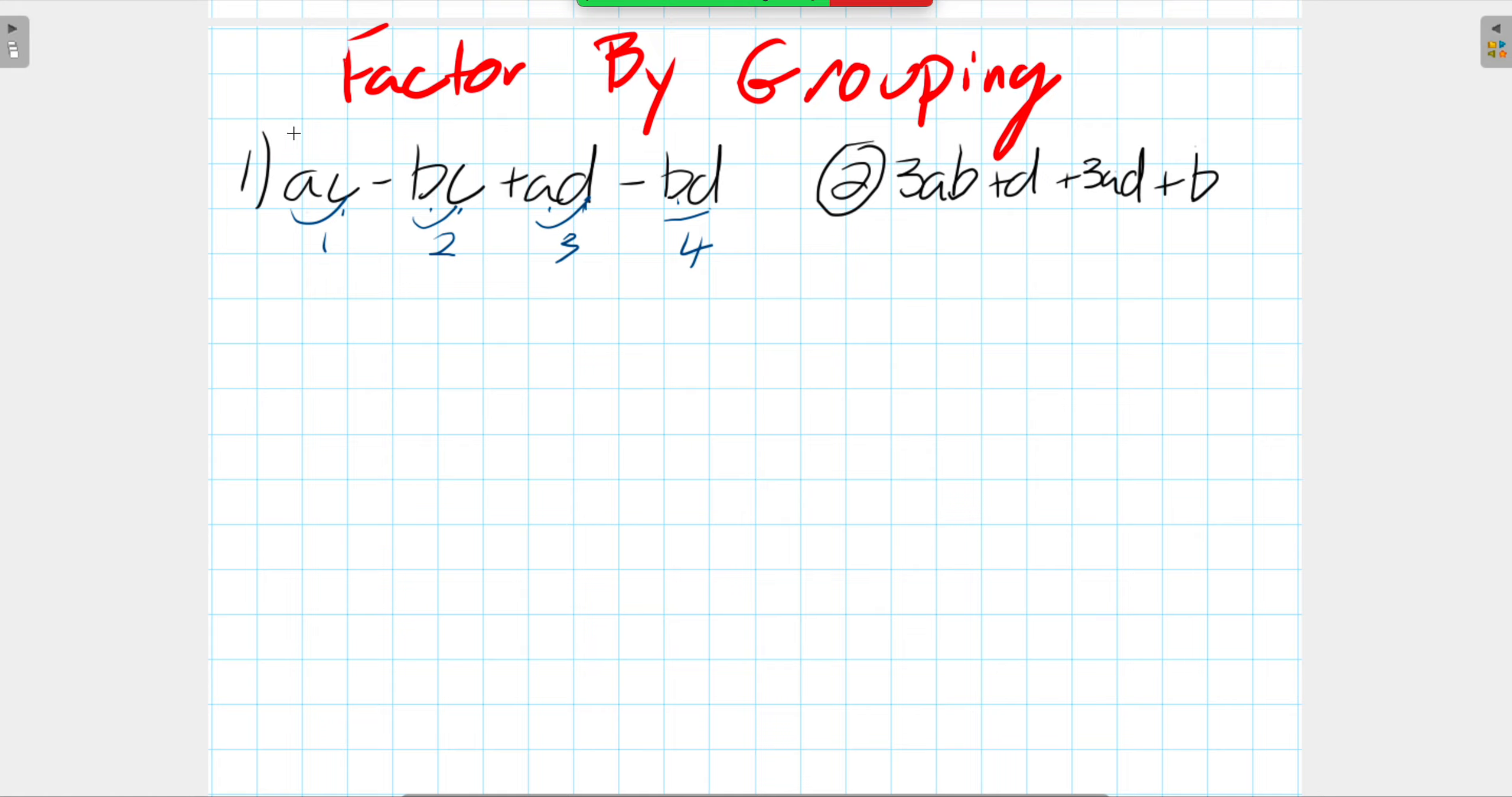I want you to think of it as terms 1 and 2 as being a set and terms 3 and 4. We're going to try to common factor out of those pairs of groups. In the very first one, we'll rewrite it again. We have AC minus BC plus AD minus BD.